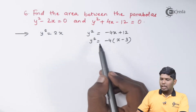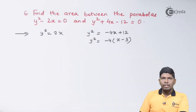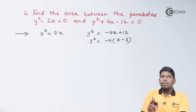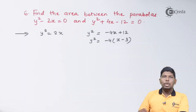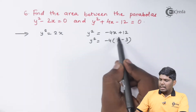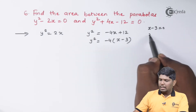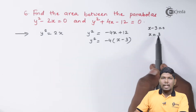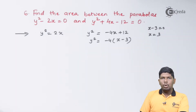The second parabola has a negative x coefficient, so it opens in the negative x-axis direction. But the vertex of that parabola lies at (3, 0). Just equate the bracket to zero: if x minus 3 equals 0, then x equals 3. So this parabola starts from the point (3, 0), while the first parabola starts from the origin.